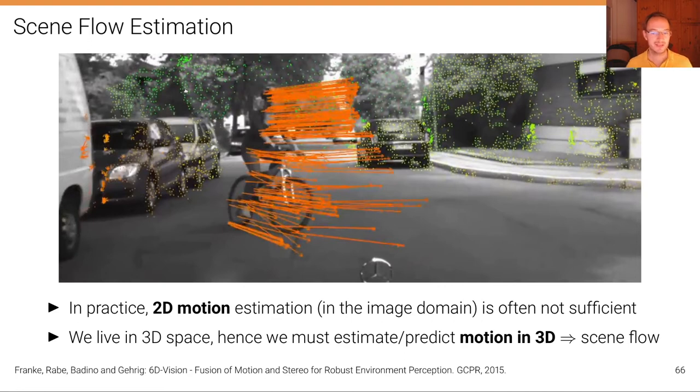Hence, we must estimate and predict motion, for example, of other traffic participants in 3D. And this is what is called scene flow.